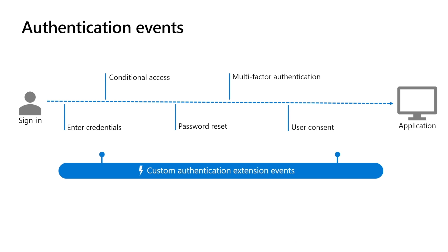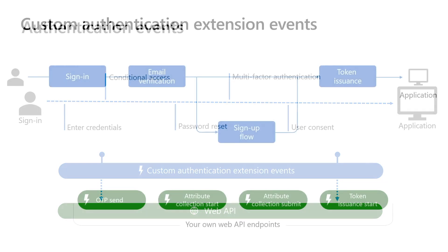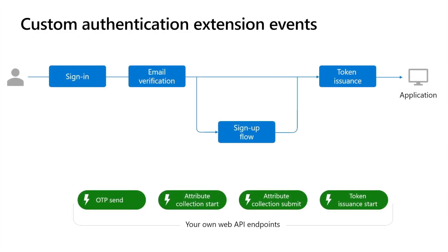When an event is activated, Microsoft Entra ID makes an HTTP call to a Web API endpoint where you define your own custom business logic. The following events are available. The On OTP Send event happens when Microsoft Entra ID is about to send a verification code to the user's email.